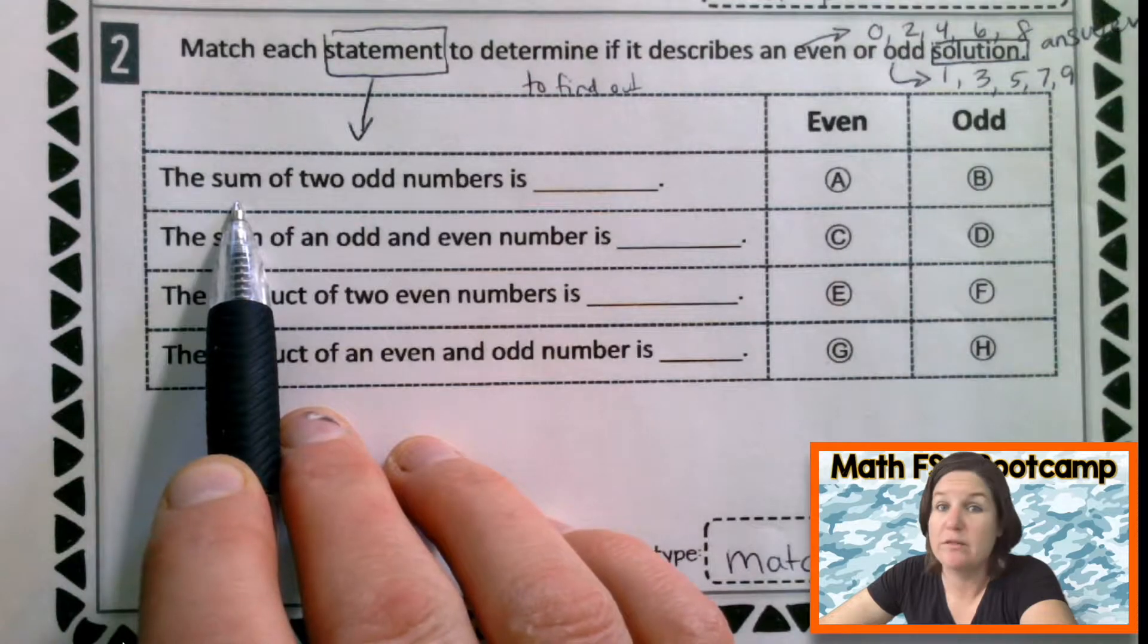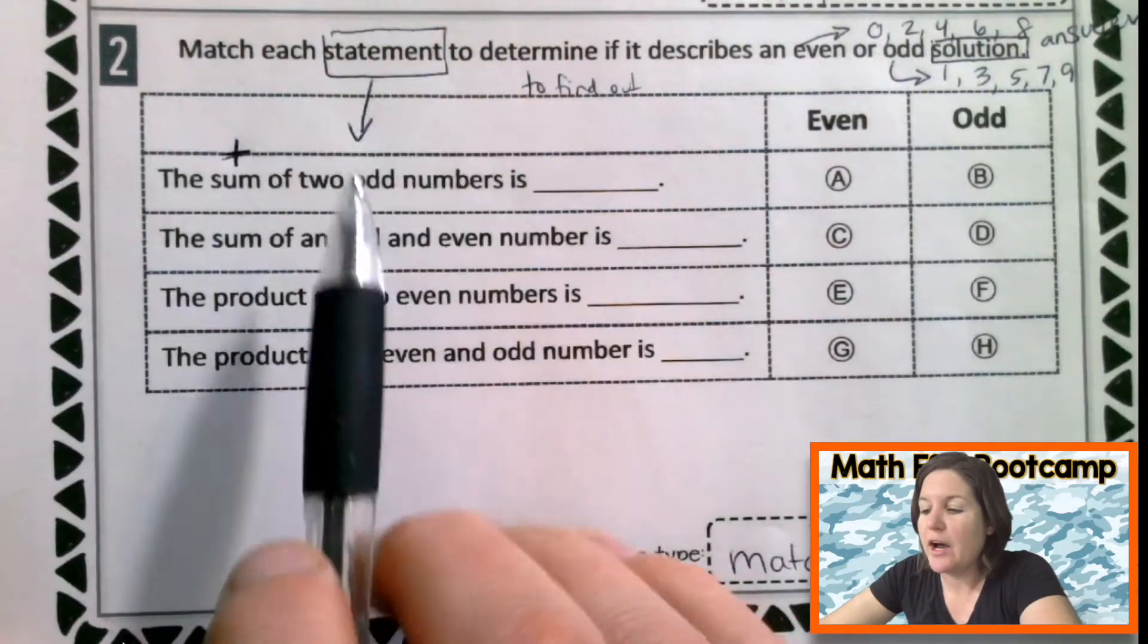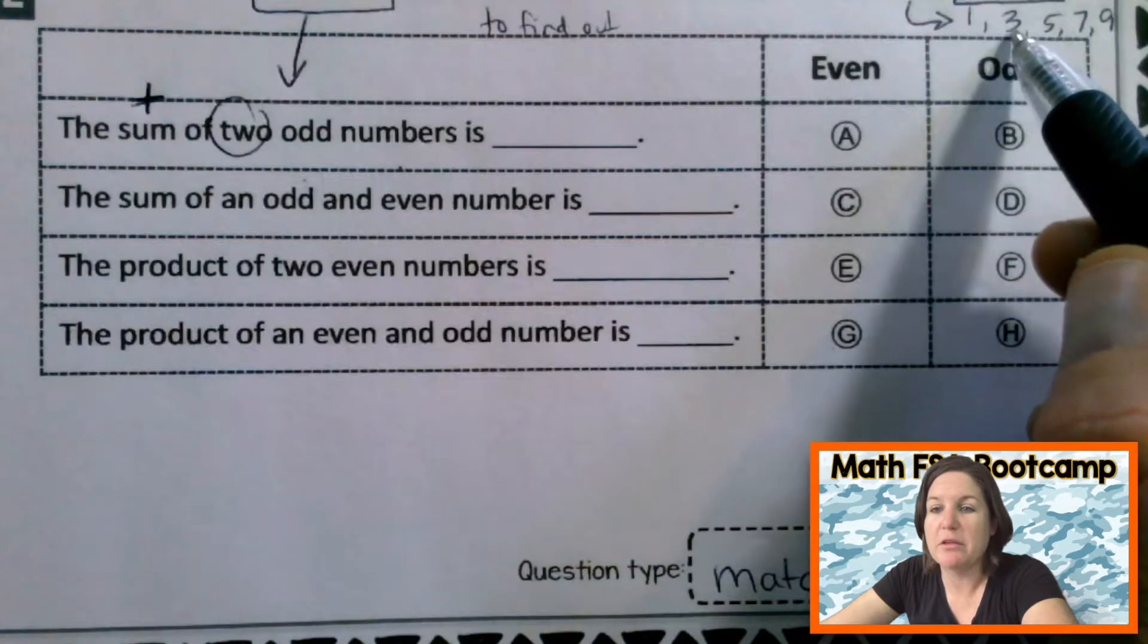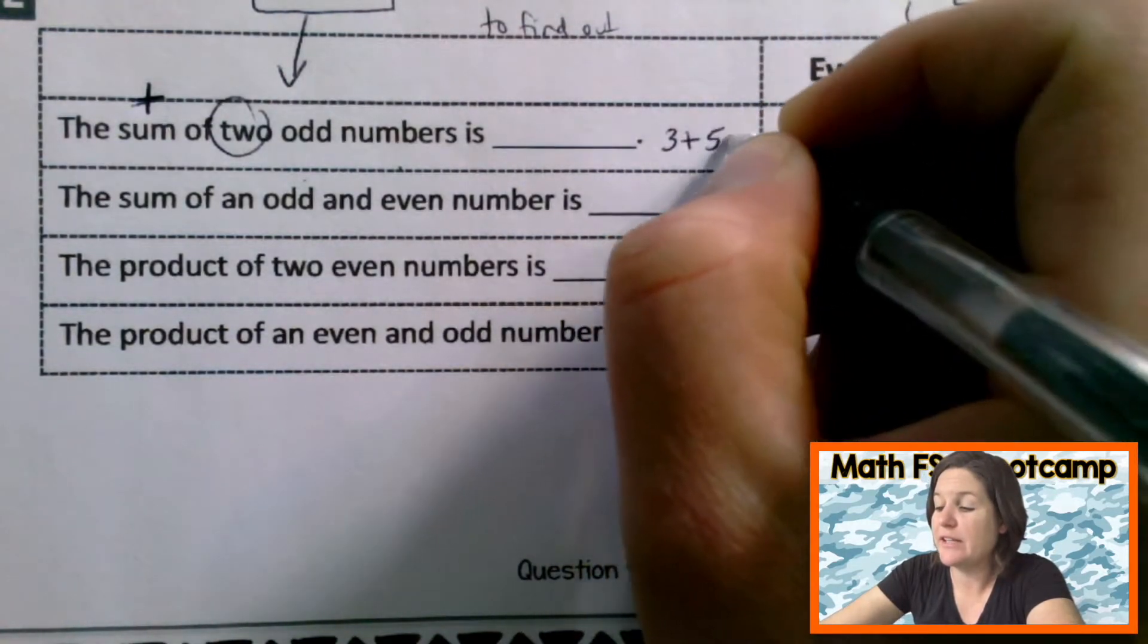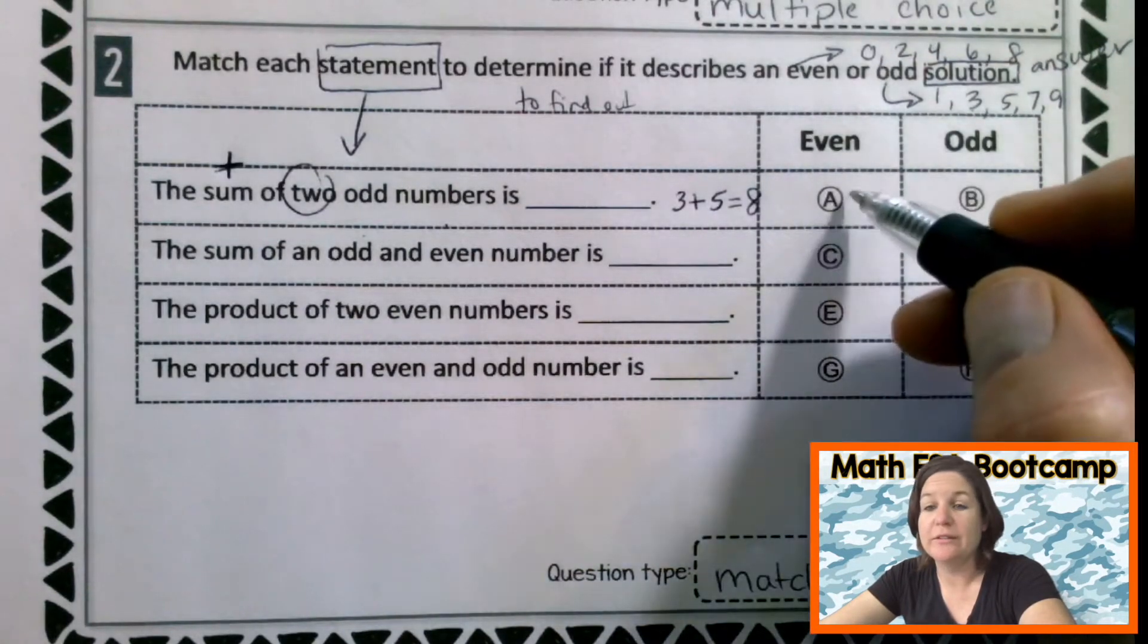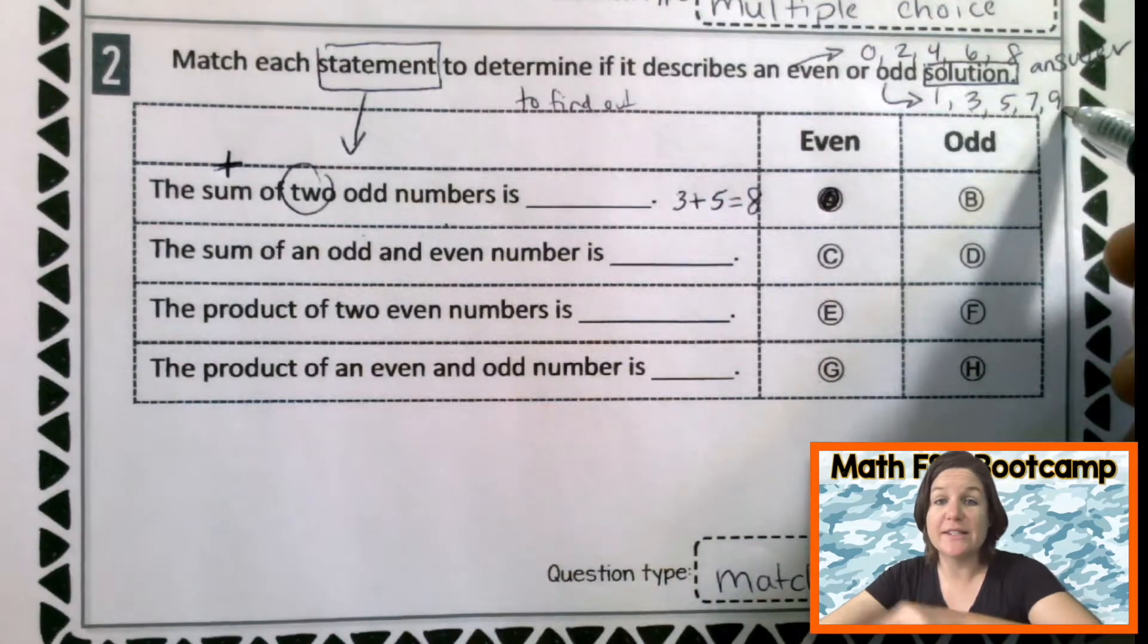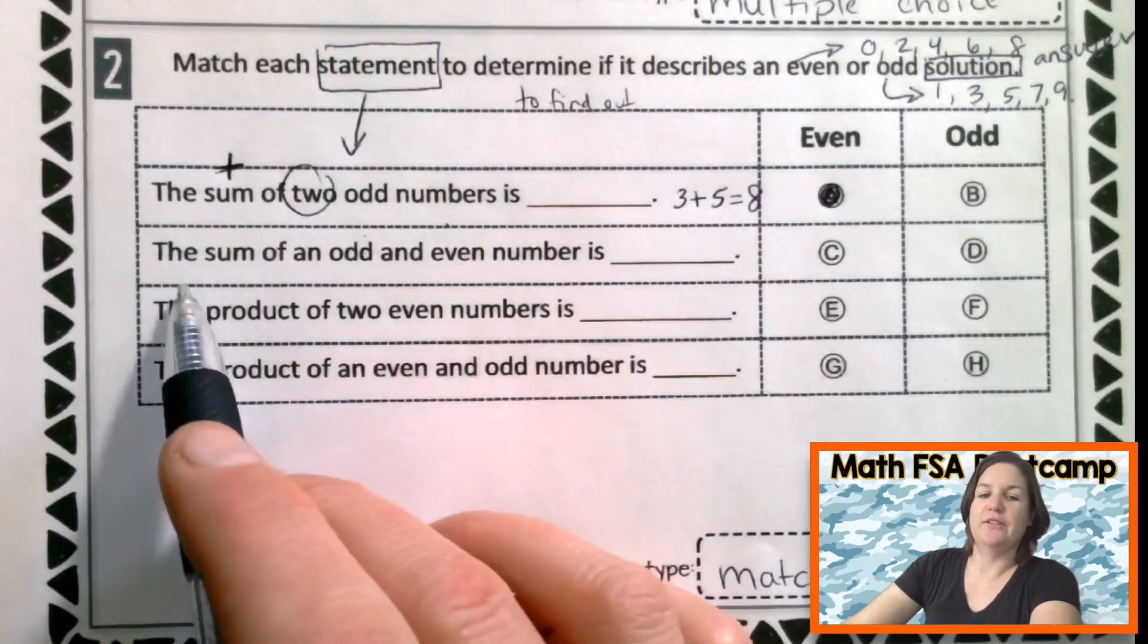So it says, the first row says, the sum. What are we doing if we're finding the sum? We are adding the sum of two odd numbers is what? Well, let's pick some odd numbers and add them together. Let's pick 3 and 5 as an example. 3 plus 5 equals what? 8. Is 8 even or odd? Even. So we can mark it even. If you were to do a different one like 7 and 9. 7 plus 9 is 16. 16 is even. That works.